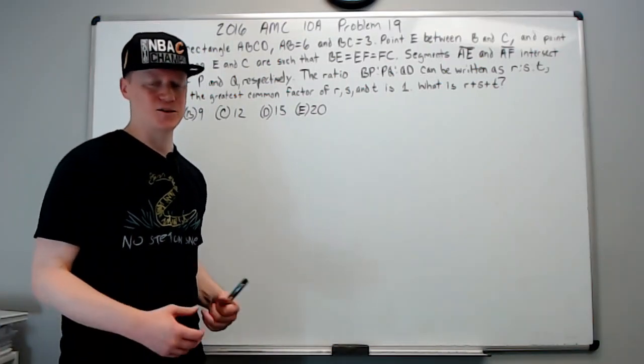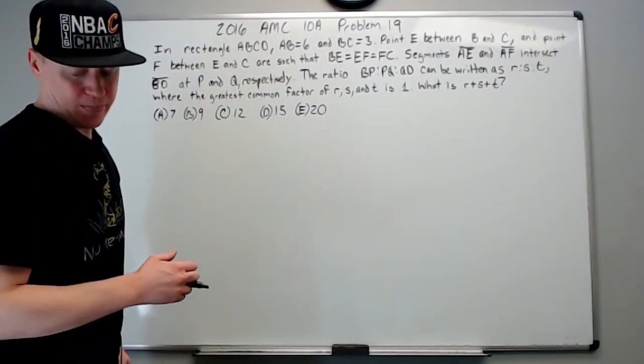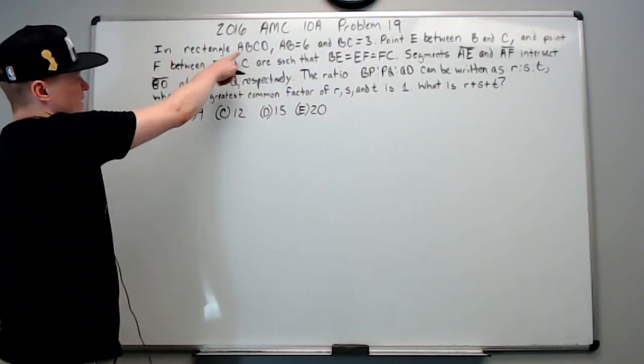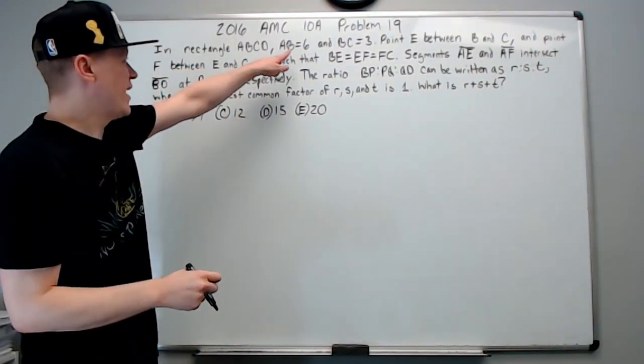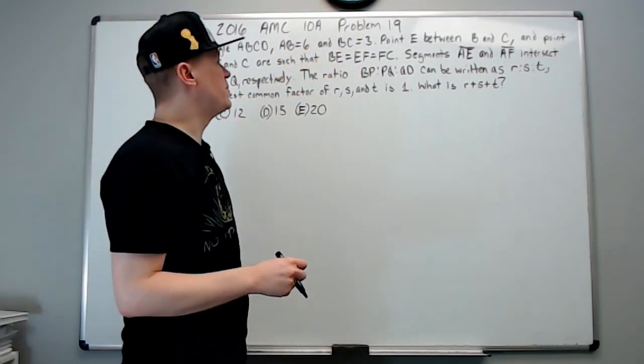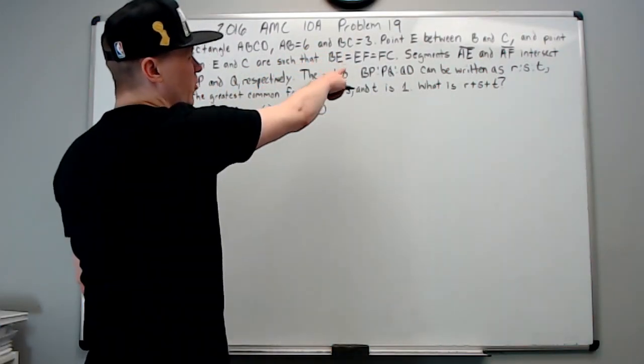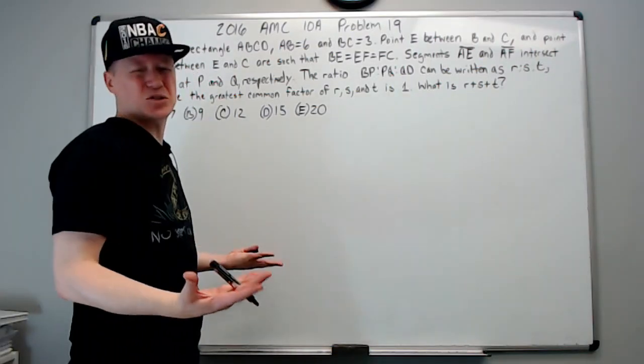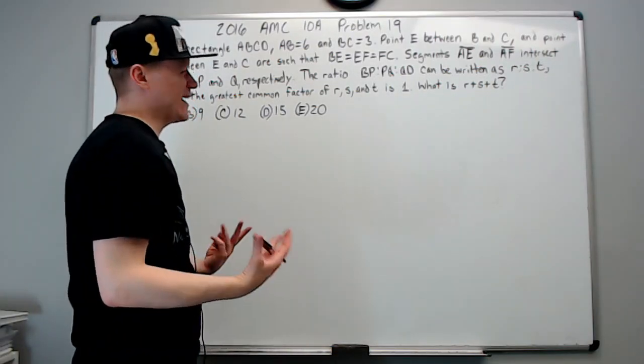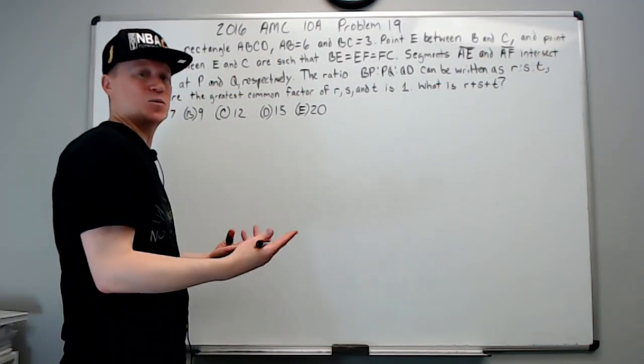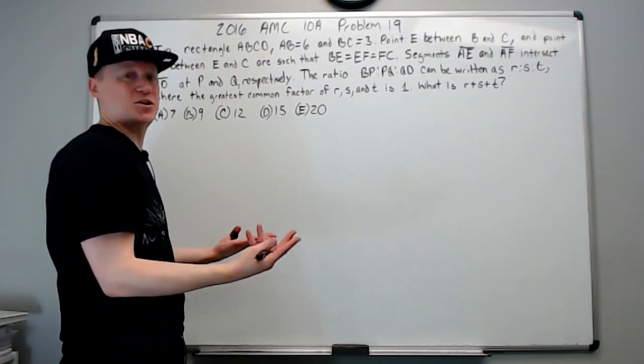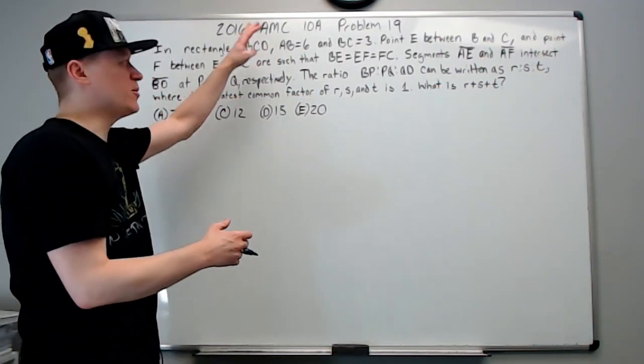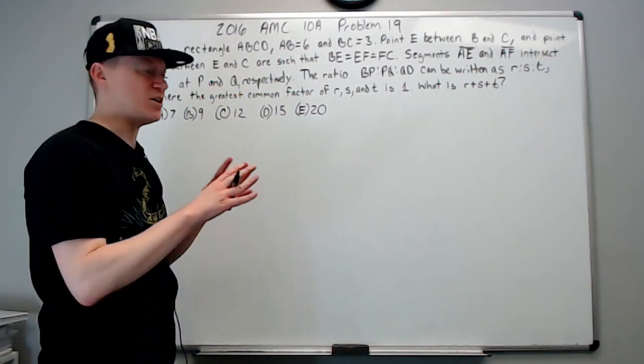In rectangle ABCD we have lengths AB equals six and BC equals three. Point E between B and C, and it goes on. Again, you're kind of going to lose track of what they're talking about at that point. I like to just start making what they're talking about. Making a picture to represent the words is a crucial skill you absolutely have to have it.